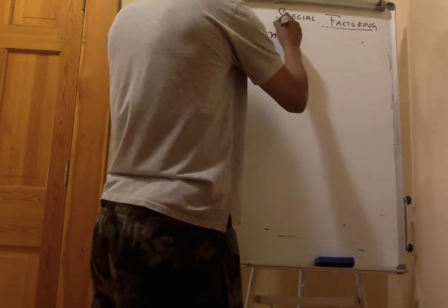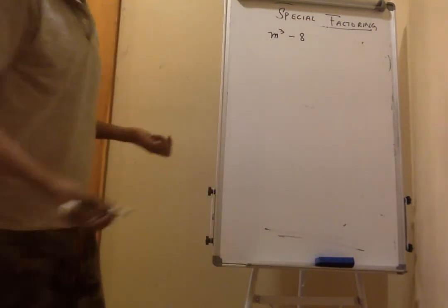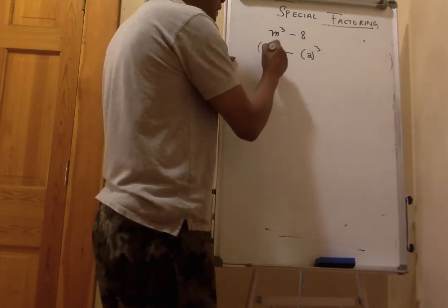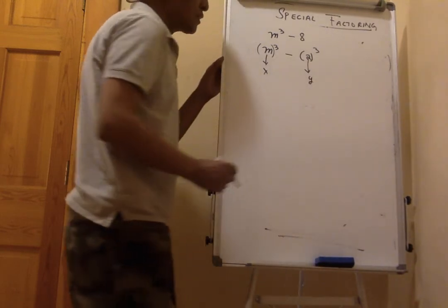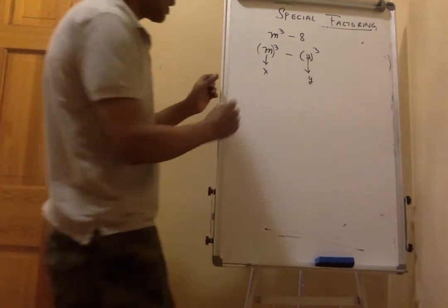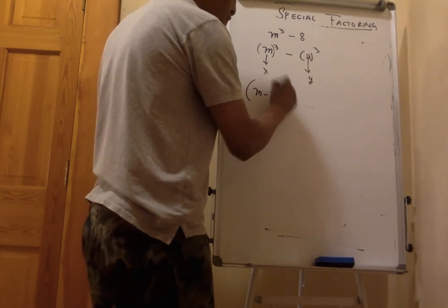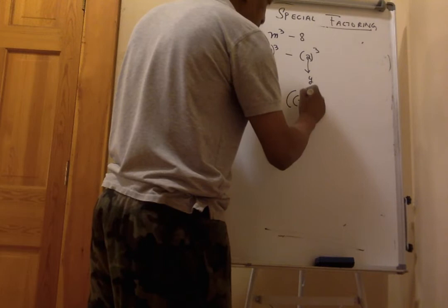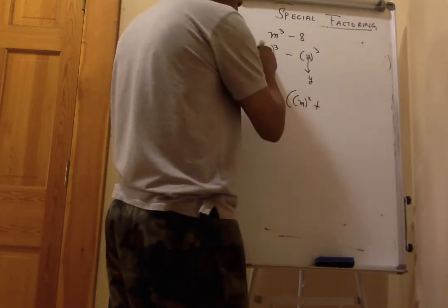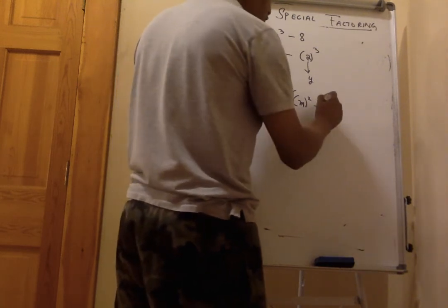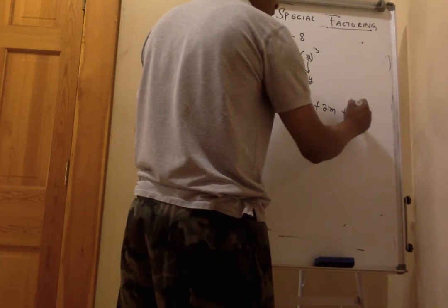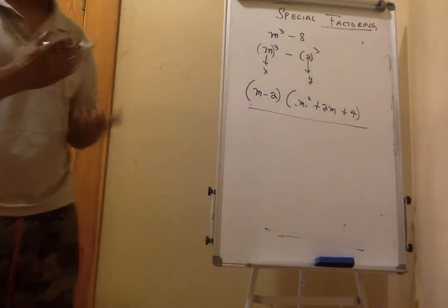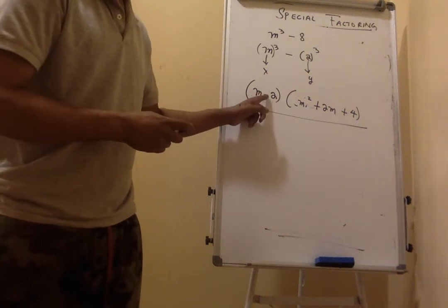Let's use m cubed minus 8. Rewrite as m cubed minus 2 cubed, so x = m and y = 2. Apply the difference of two cubes formula: (m - 2)(m squared + 2m + 4). The structure is the same as the difference of two cubes — the only change is the binomial factor is minus.